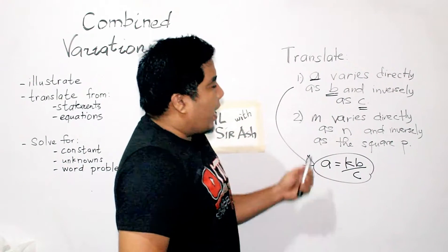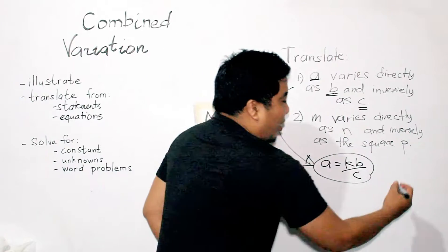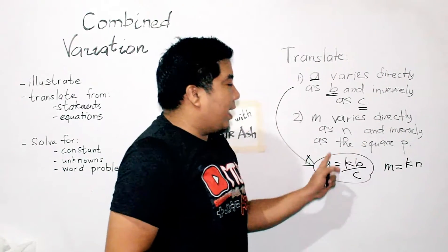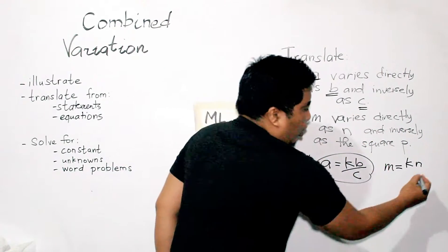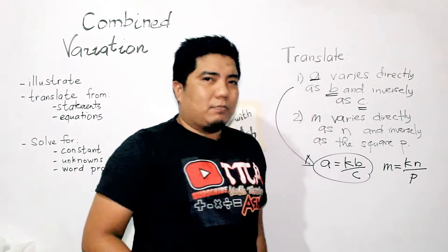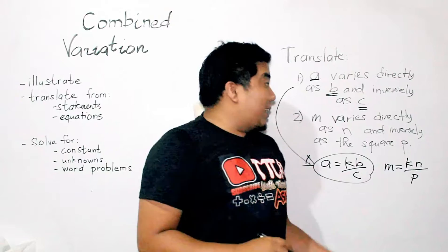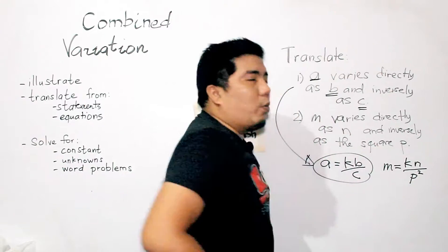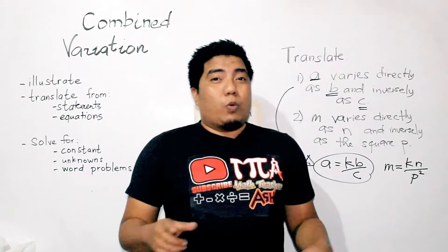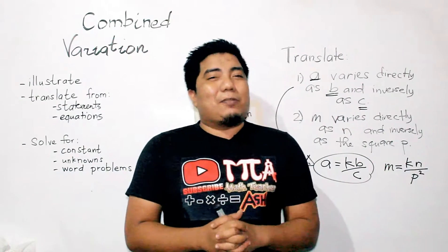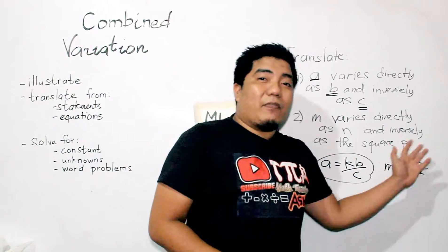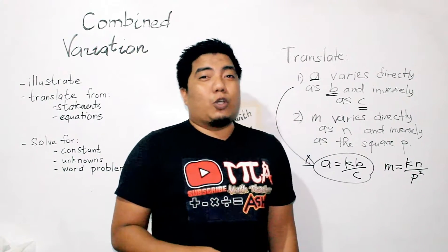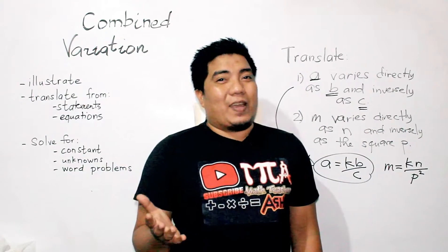For the second statement: M varies directly as N, so that is M is equal to KN. Then inversely as the square of P — we make it over and put P. But be careful: it says the square of P, so P should have a power of 2, which is P squared. So the translation is M = KN over P squared. Be careful in translating your statements so that when you apply the given mathematical sentence with various values, your solution won't have any mistakes.